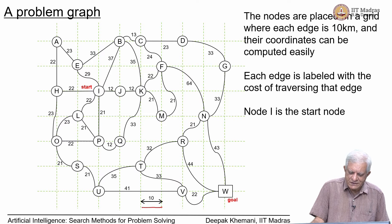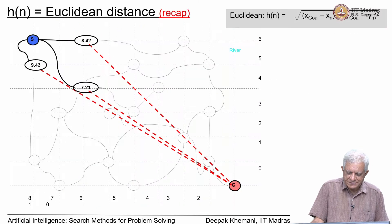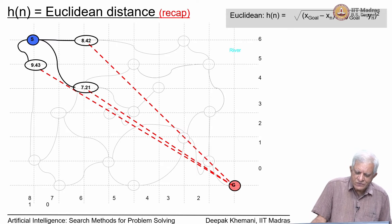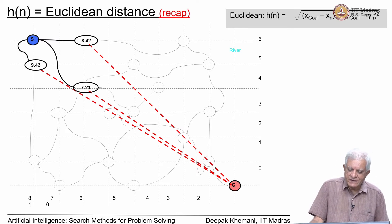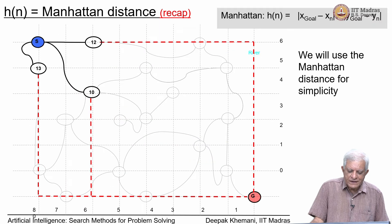Node I is the start node and W is the goal node. We had seen two heuristic functions: one was Euclidean distance, which is the straight-line distance as the crow flies between any node and the goal node, and the other was the Manhattan distance, which is the grid distance going along the grid values until you reach the goal.